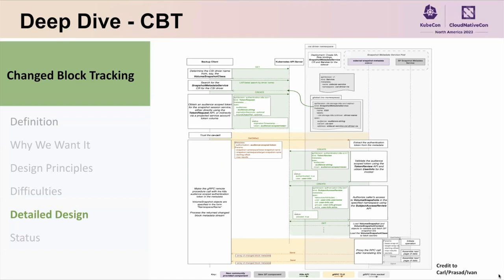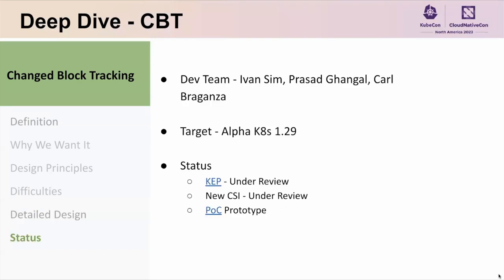You probably won't be able to read the image from this detailed diagram. A huge thanks to folks who worked dedicated on this — Carl, Prasad, and Elon, et cetera. This is from their slides presented to the community in our Data Protection Working Group meetings. The dev team is mainly composed of Evan, Prasad, and Carl — they've been spending a lot of effort on this. The release target right now is alpha in Kubernetes 1.29. Current status is the KEP is under review, both the KEP and the new CSI spec are under review right now, and they have also provided a proof-of-concept prototype, the link for which is provided in the slides.